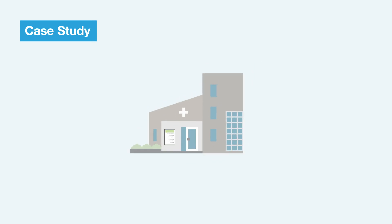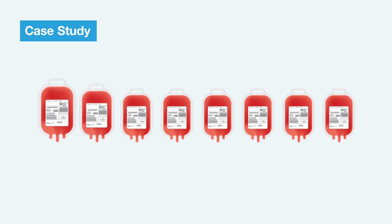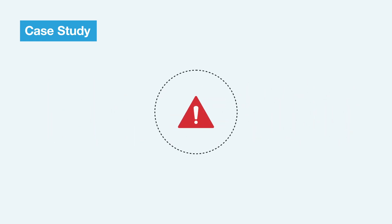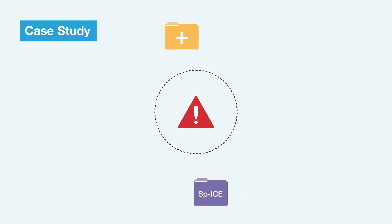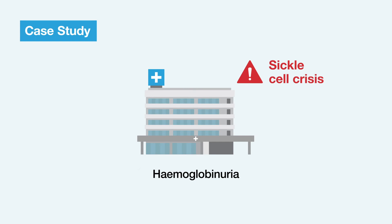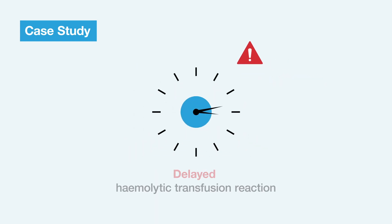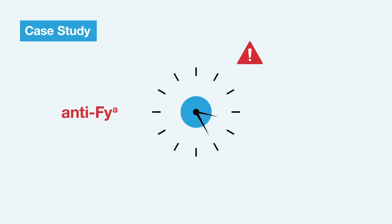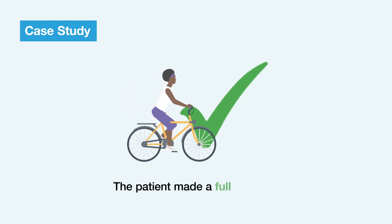She underwent preoperative exchange transfusion at the specialist centre with eight units. Neither her base hospital transfusion laboratory records, nor SPICE data were accessed for her antibody history. Four days later, she presented to her own hospital unwell with haemoglobinuria, and was initially thought to be in sickle cell crisis. However, this was a delayed haemolytic transfusion reaction associated with anti-FYA and anti-FY3, which were identified in the eluate. She made a full recovery.